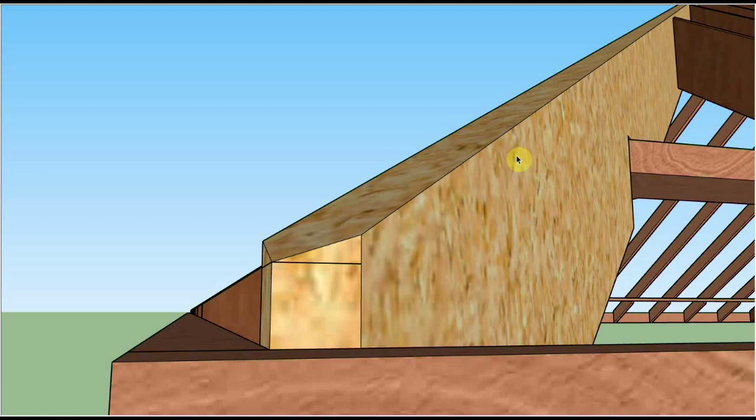So dropping and backing are two ways to get the top of a hip rafter in plane with the common rafters.